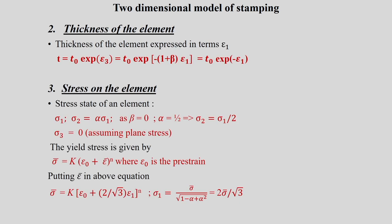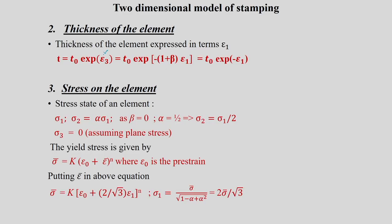Thickness is important because we do not want it to reduce beyond a certain limit; otherwise it leads to instability — necking and fracture. The new thickness T is obtained from T = t0 * exp(epsilon 3). With beta = 0, this becomes T = t0 * exp(minus epsilon 1). So if we know the original thickness t0 and epsilon 1 from circle grid measurements, the new thickness can be evaluated.